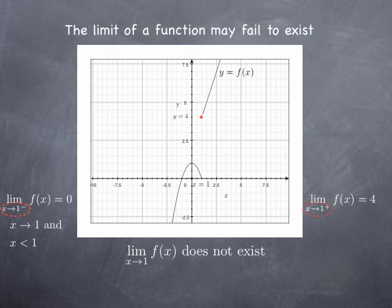Similarly, this x is approaching 1 with a plus exponent next to the 1 means that x is approaching 1 and x is greater than 1. And we're going to call this limit the limit from the right.